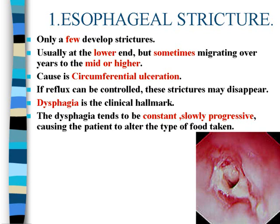If reflux can be controlled, these strictures may disappear. Dysphagia is a clinical hallmark. The dysphagia tends to be constant and slowly progressive, causing the patient to alter the type of food taken.